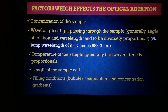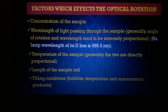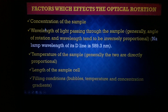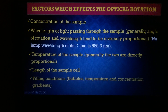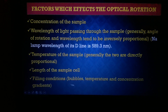Factors affecting optical rotation: concentration of the sample solution — optical rotation is linear with sample concentration. Wavelength — the angle of rotation is inversely proportional to the wavelength; we commonly use the sodium D-line at 589 nm. Temperature — directly proportional to optical rotation; higher temperature gives more rotation. Length of the sample cell — this also impacts optical rotation. Filling conditions — the sample tube must be filled with a clear, bubble-free solution.